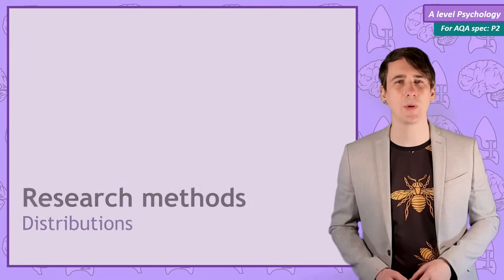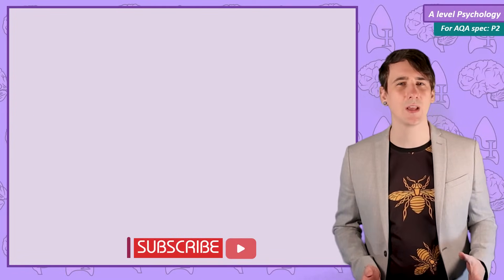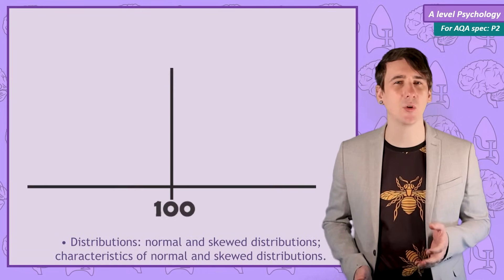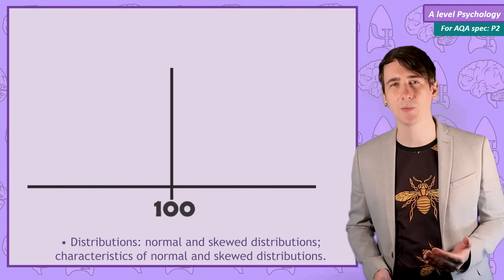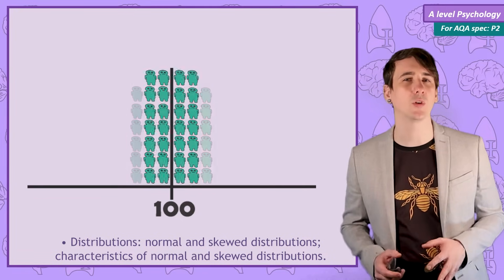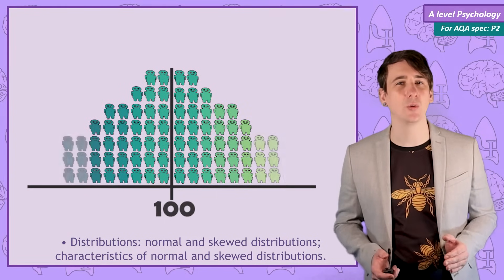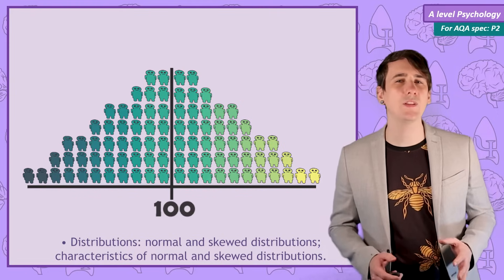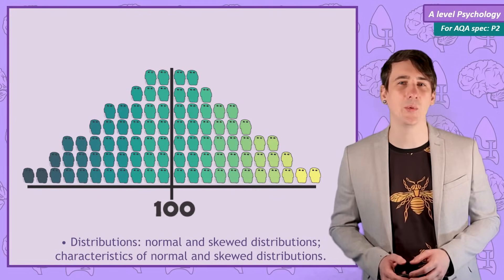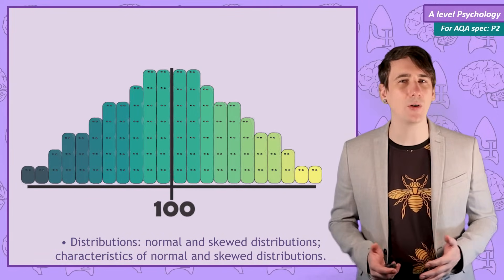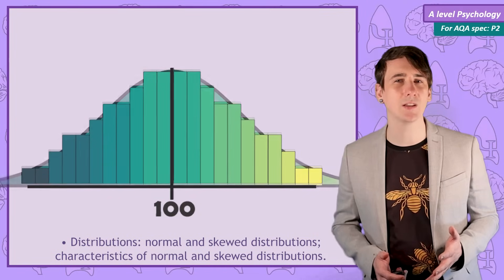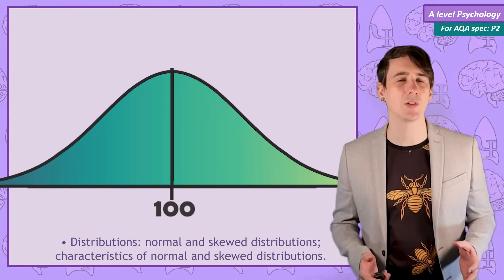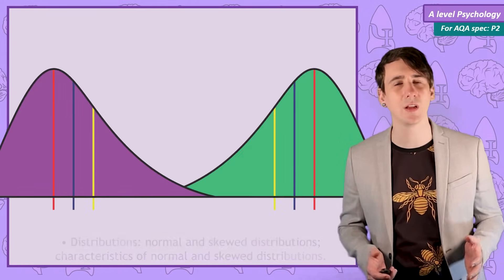If I say IQ test to you, you probably know it's a series of logic questions and at the end you get a score. It's a measure of intelligence, with the average IQ score being 100 and the higher the score the more intelligent you're supposed to be. With most people having a score close to 100 and very few, very unusual people having exceptionally high or low scores. When we display the frequency of people getting each score on a graph, it forms a bell shape — a very common distribution of data called a normal distribution. In this video we'll discuss normal distributions as well as skew distributions.